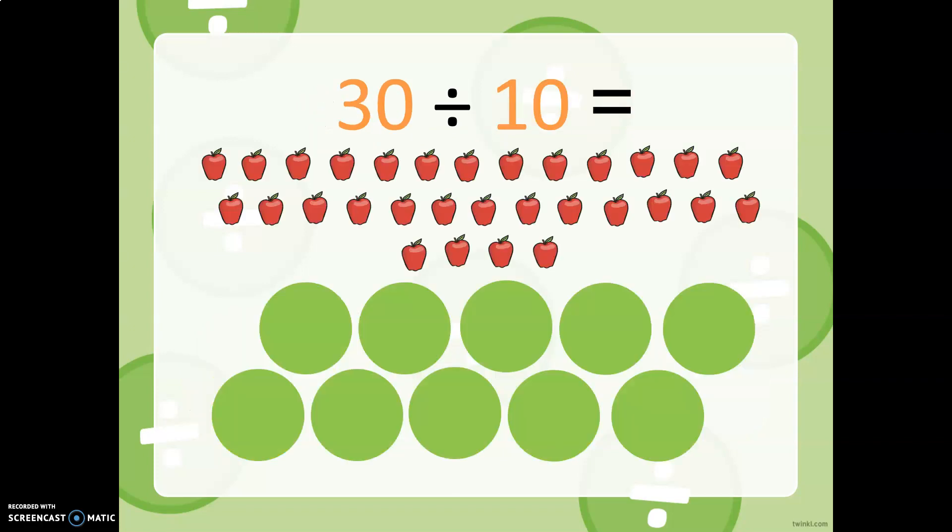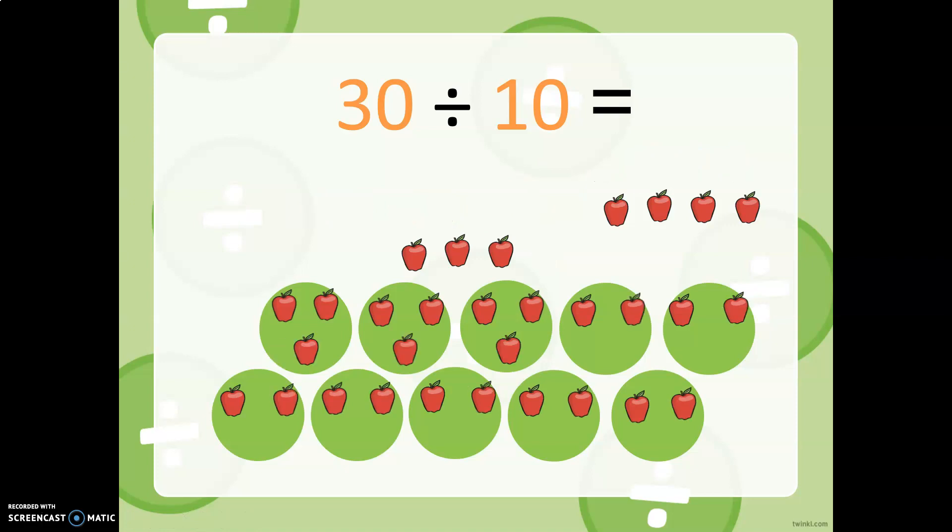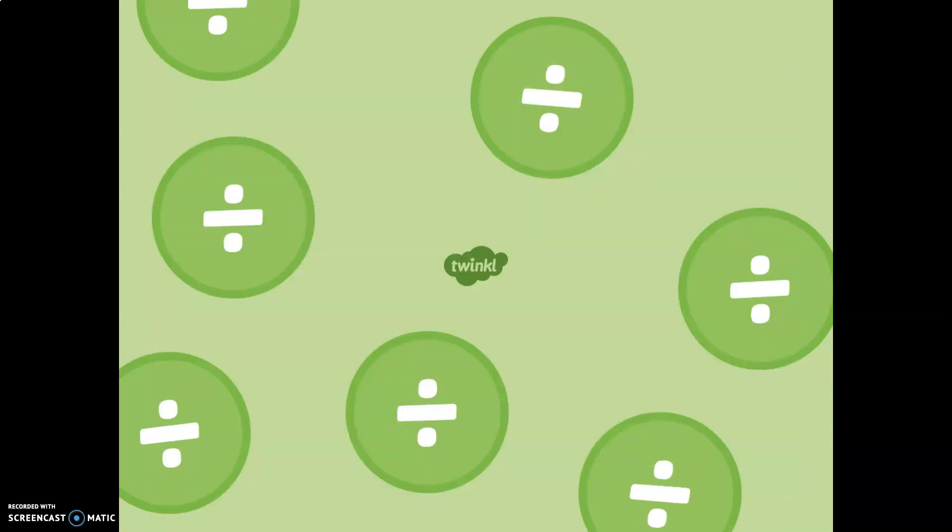30 apples and 10 tables. I've got one apple, two apples, three apples, three apples per table of 10. So 30 divided by 10 is three. Pretty simple.